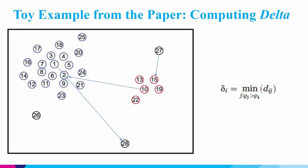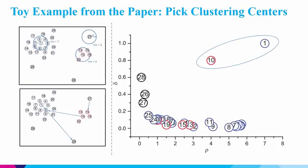Now we have two parameters, rho and delta, associated with each node. We can make a scatter plot with rho on the x-axis and delta on the y-axis. In this scatter plot, the cluster centers will be the nodes in the top-right corner — outliers with both high rho and high delta. This is the second step. The final step is to assign nodes to cluster centers: compute the distance of every node to the identified centers and assign each to the nearest cluster center. This gives us two clusters, and that is the density peak method.